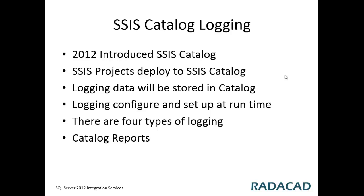Logging is quite easy with the SSIS catalog because it has a GUI for setting up logging. You don't need to enable or disable logging at development time — it all happens at execution time, and you can do that easily in a production environment or any other environment. There are four levels of logging, and there are built-in SSIS reports that you can use for catalog reporting.